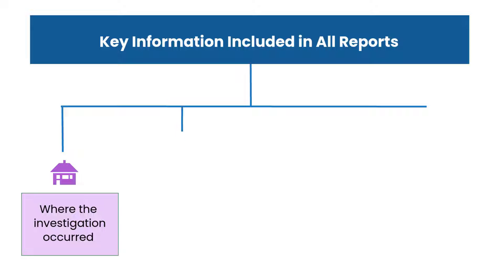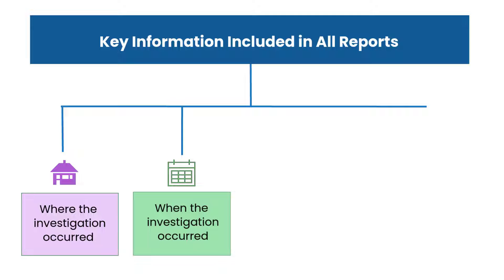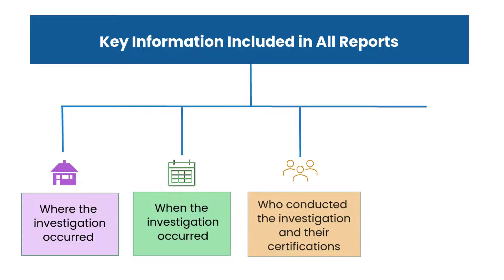The second key reportable result is when the investigation took place. Both dates and times should be reported. The third key reportable result is who performed the investigation and who conducted laboratory analysis, if any. This includes identity, location, certification credentials, certification number, and contact information of the firm doing the investigation, of the persons conducting activities, and of the labs, if used.